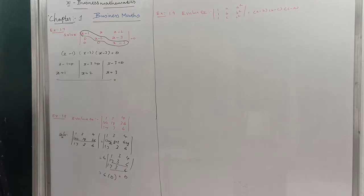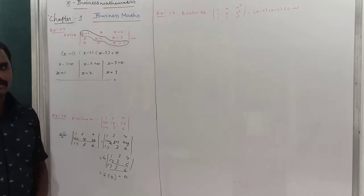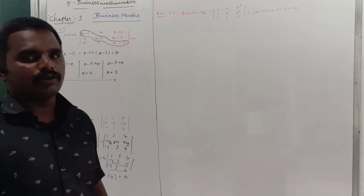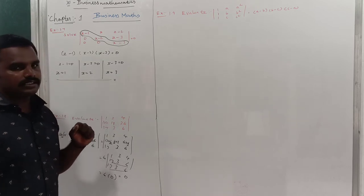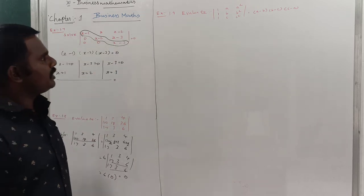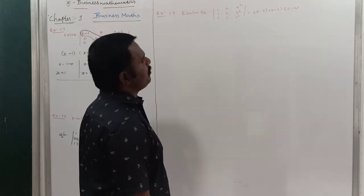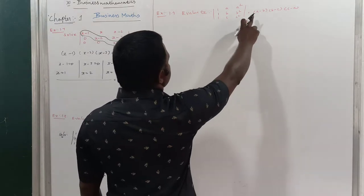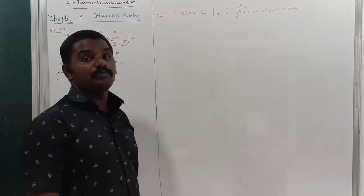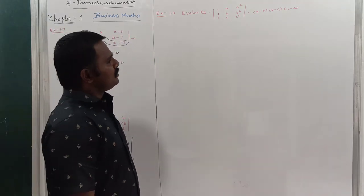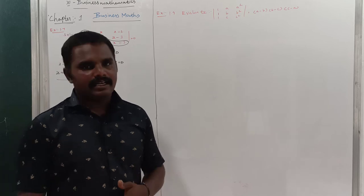Therefore, the value of that determinant is always equal to 0. This is a very important property you have to learn. Now the next problem: evaluate the determinant with entries 1, A, A²; 1, B, B²; 1, C, C² and prove it equals (A−B)(B−C)(C−A). This uses another property of determinants.